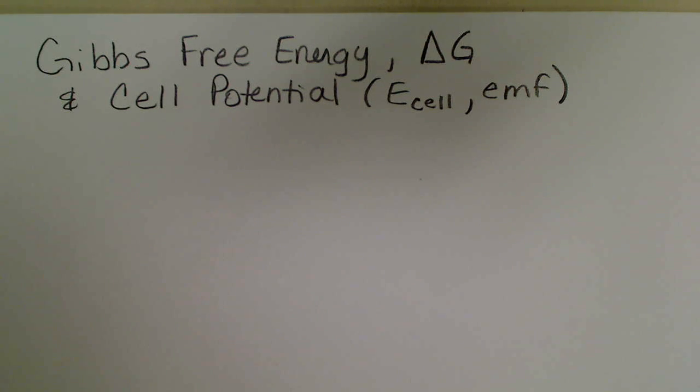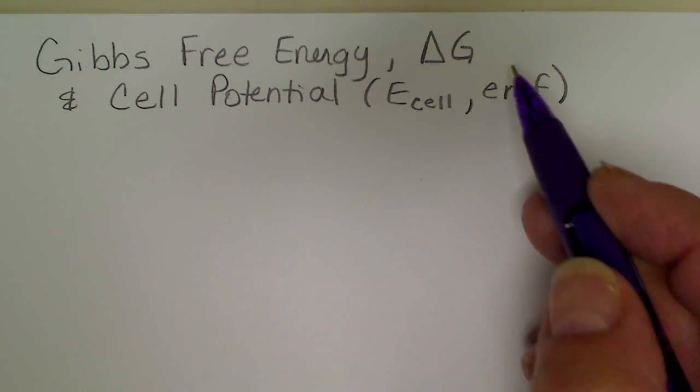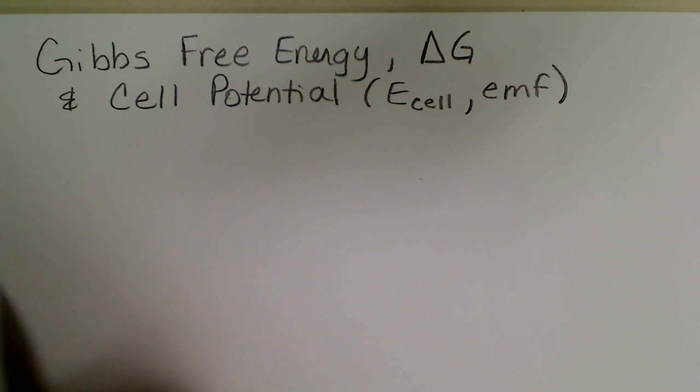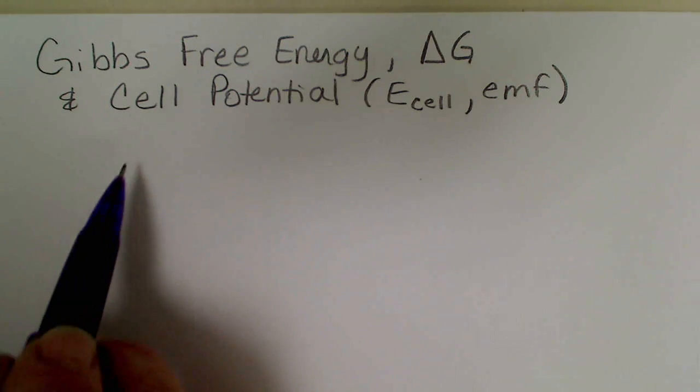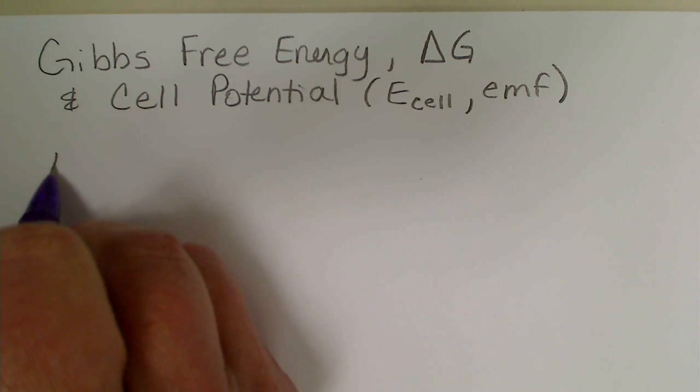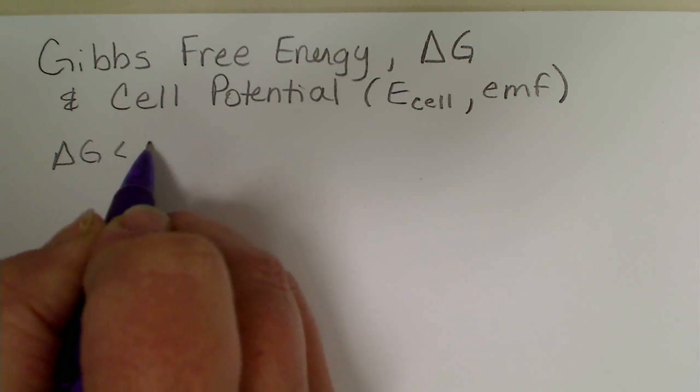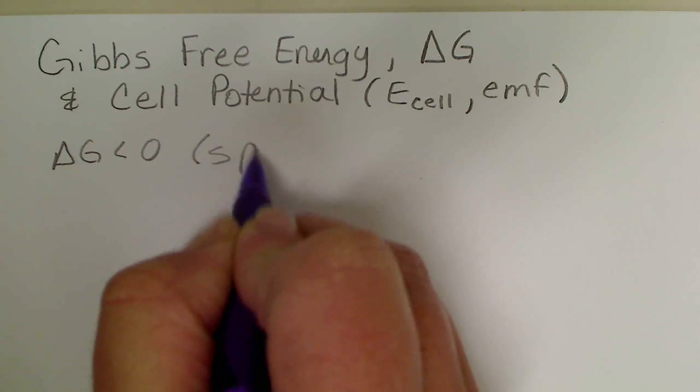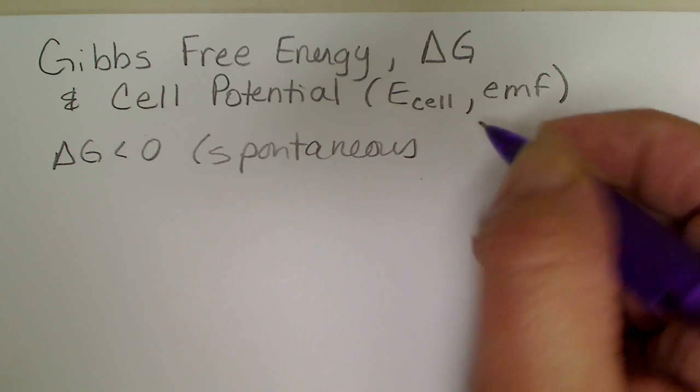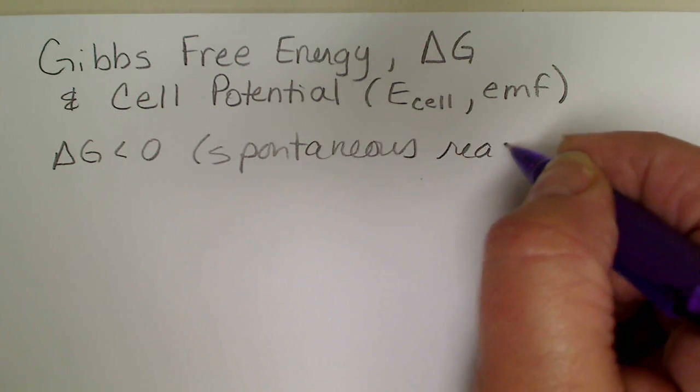In the previous chapter we looked at the thermodynamic property of Gibbs free energy, which we can write as Delta G. In this video we're going to relate that to an electrochemical cell and the cell potential. Recall if Delta G is less than zero, then that means we have a spontaneous reaction or a spontaneous process.